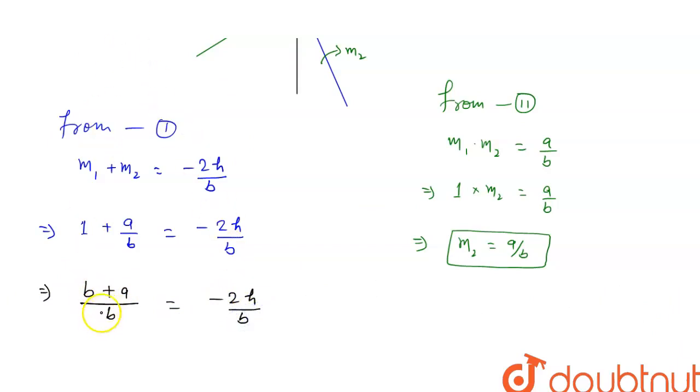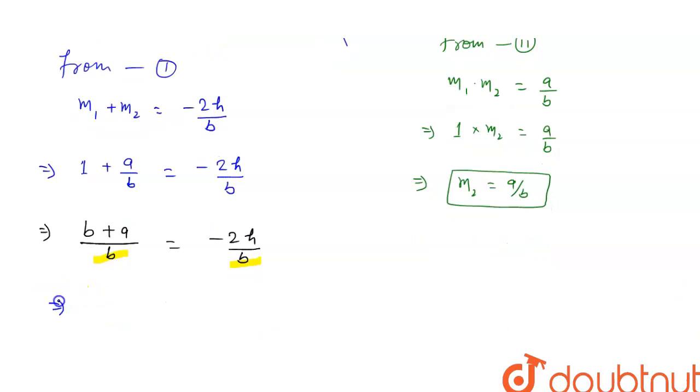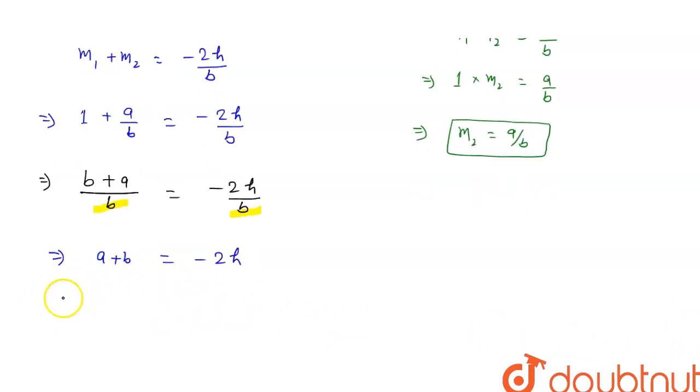This b and this b will cancel out, so we are left with a + b = -2h. Or you can square both sides: (a + b)² = 4h².